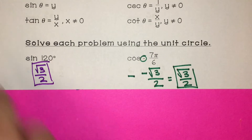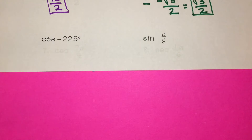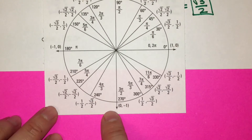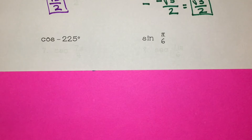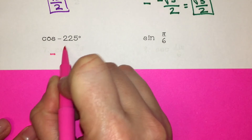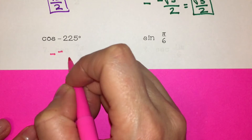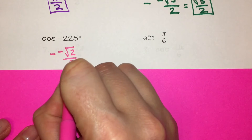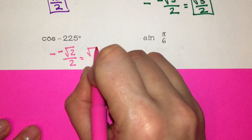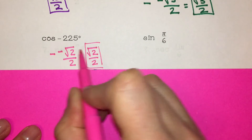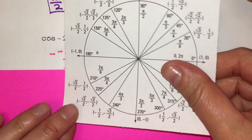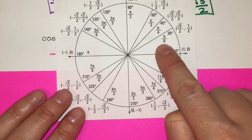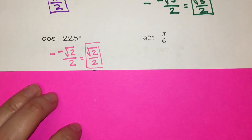We have cosine of negative 225 degrees. At 225 degrees, cosine is negative square root of 2 over 2, but we also have this negative sign to remember. A negative times a negative is a positive, so the answer is positive square root of 2 over 2. Be careful any time you have that negative sign that you don't forget about it. Now sine of π over 6 — sine is my y value, which is just 1 half.